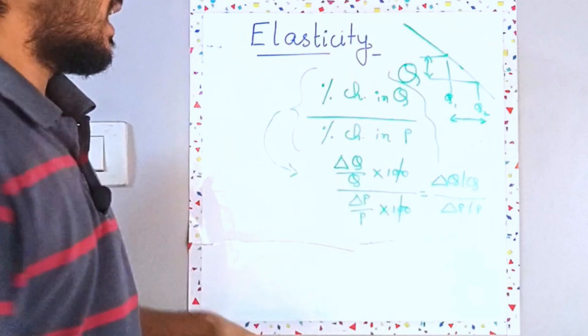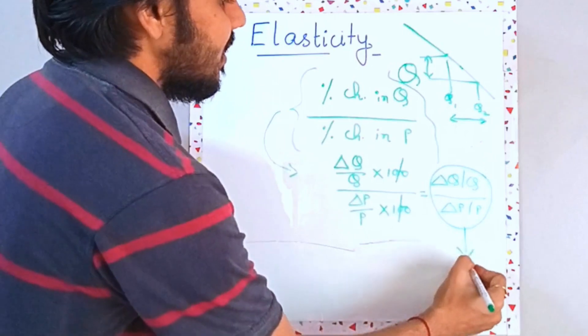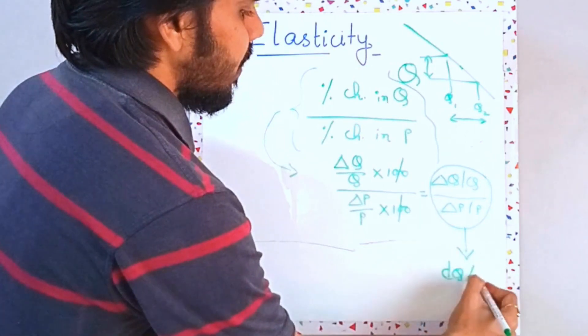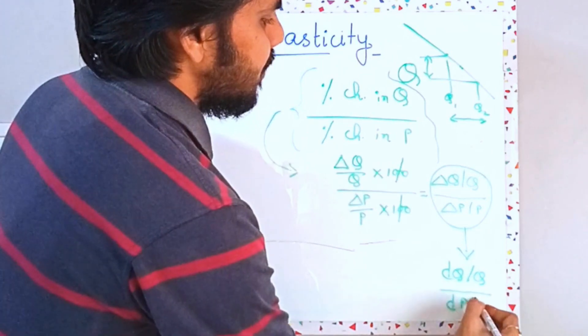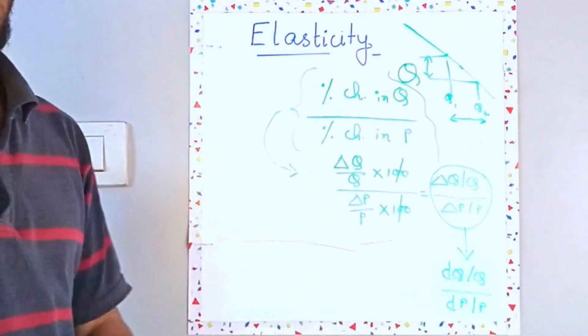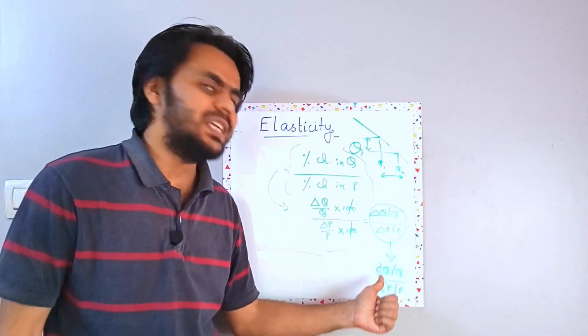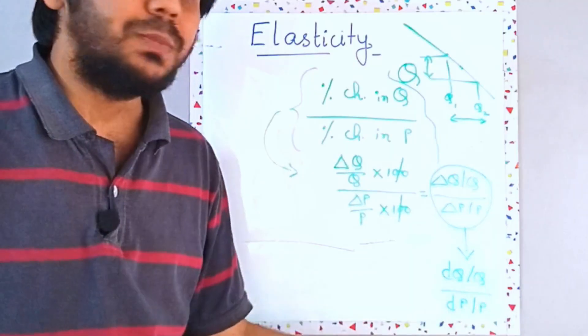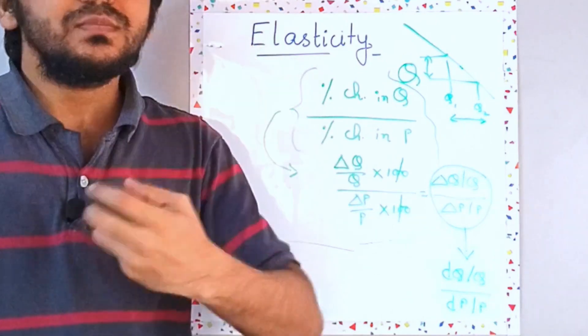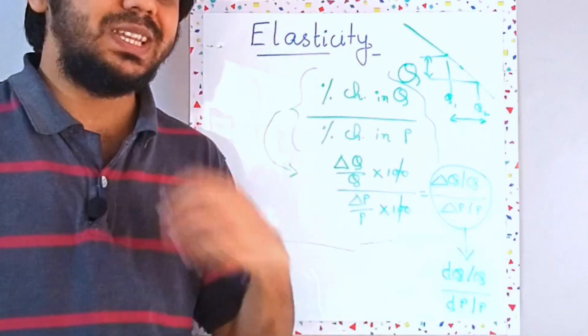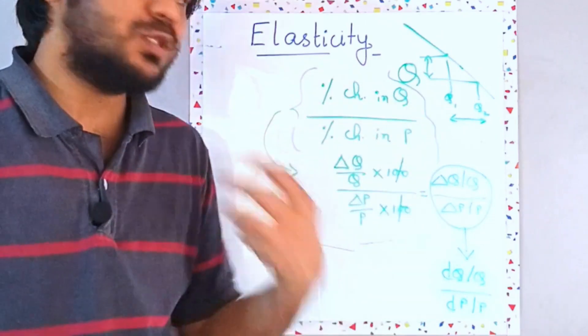So that small small thing can be written as when my change is small, I will write this thing as dQ by Q upon dP by P. And the moment we venture into the land of multivariate calculus this will change from D to del. Del Q upon Q by del P upon P. But the idea remains the same. I need to measure the very small fractional change in Q upon very small fractional change in P. And that ratio is your elasticity and for this particular case price elasticity.